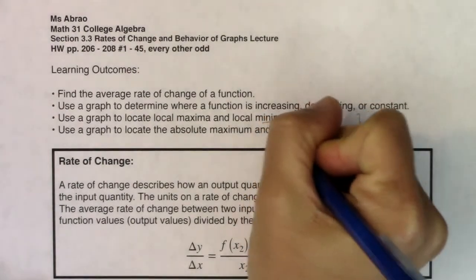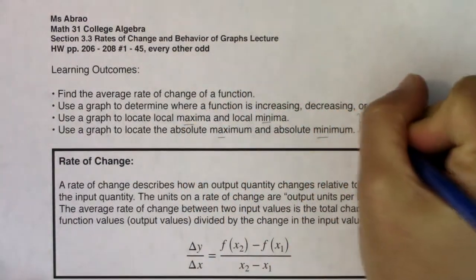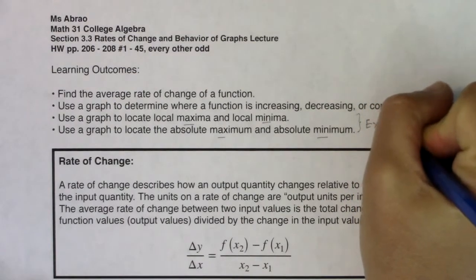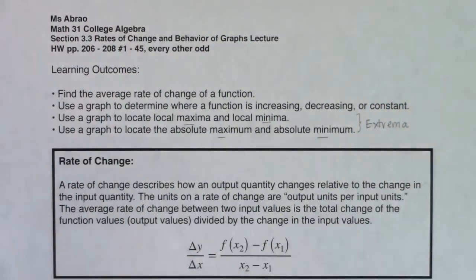We're going to use a graph to determine whether a function is increasing, decreasing, or constant. We're going to use a graph to find local max and min, and then we're also going to use a graph to potentially find absolute maxes and absolute mins. Collectively, when you're talking about maximums and minimum points, you might hear the book or myself refer to these in general as extrema.